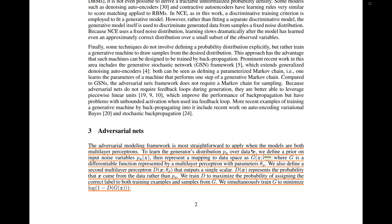We're trying to learn the generator over the real data. We define a prior on input noise — we have this input noise pz(z), so our distribution z is the fake input, and x is the real data. We then represent a mapping to data space G, which is a differentiable function represented by a multi-layer perceptron. G takes in z and has parameters theta_G.